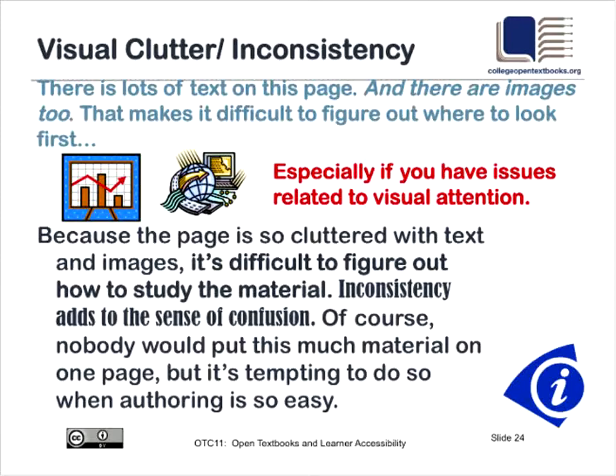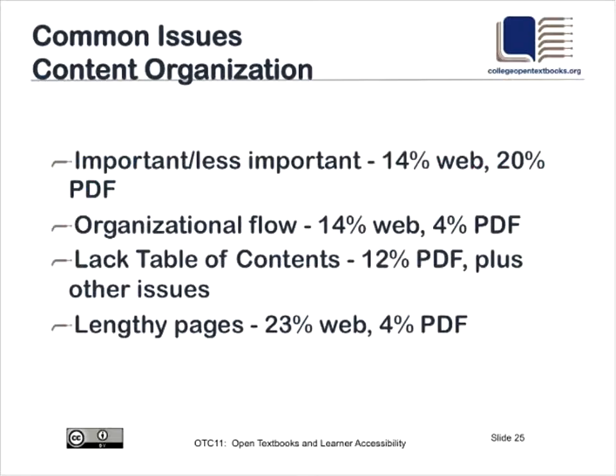Visual clutter and inconsistency is a problem. This is a bad example — obviously nobody would expect to see anything this bad in a textbook, yet we did. The problem is it's very difficult to sort out what the point of the information on the page is. It uses different colors, different fonts, different sizes of text, and has images thrown in. There are ways an author can make their material more intellectually accessible. Authors like to add things to make it look prettier, but looking prettier isn't the point — being clearer about what you're saying is the point.